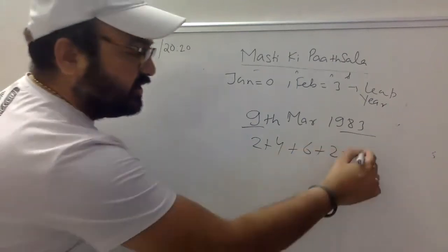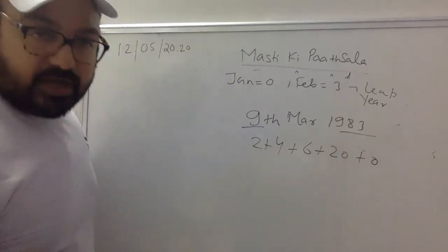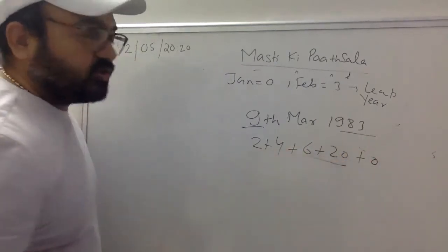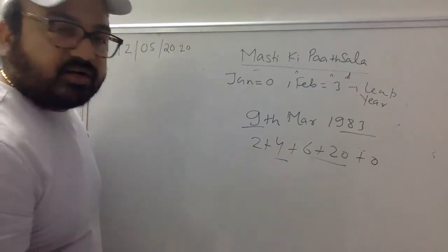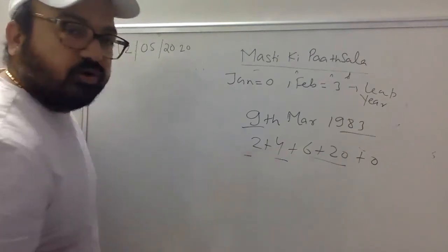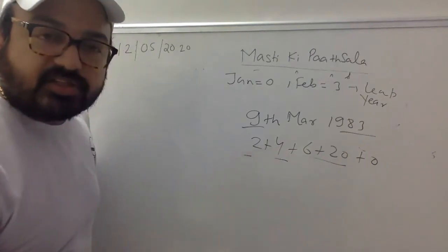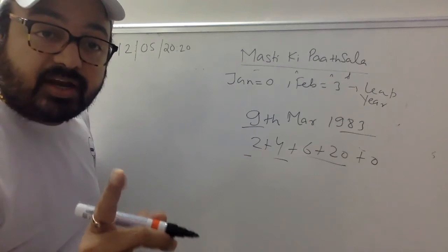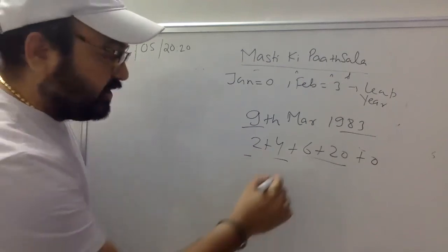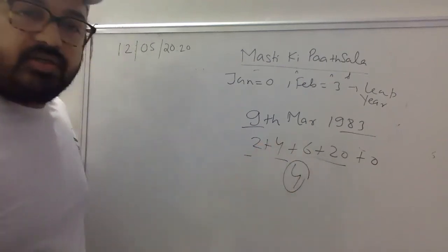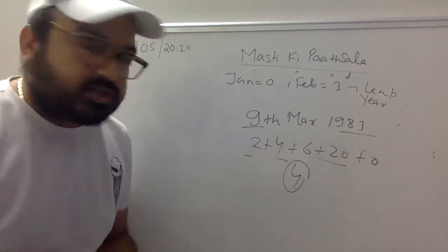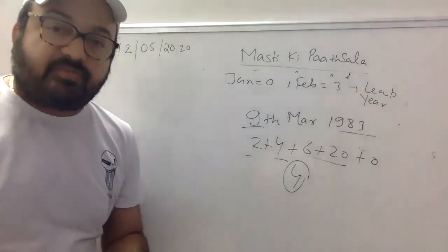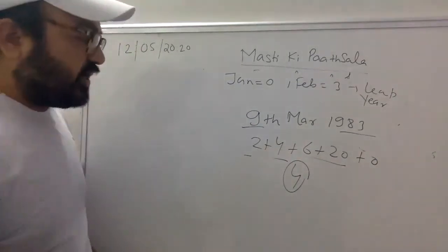1900 का code 0. Add करो: 2 + 4 + 6 + 20 + 0 = 32. 7 से divide करो: 7×4=28, remainder 4.